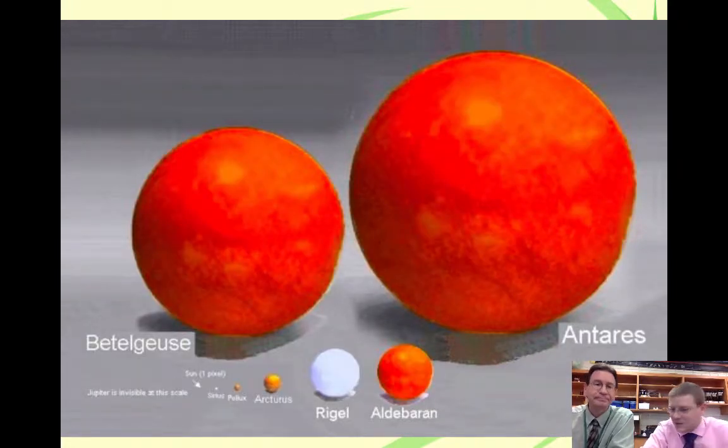Then we went into Rigel and Aldebaran. Those are bigger stars than Arcturus. Betelgeuse, Antares is one of those large ones out there. And there's even bigger stars than this. You can see our Sun now is one tiny little pixel. Even Antares was once thought to be the largest star, but it's not even the biggest anymore. They just keep finding bigger and bigger stars.